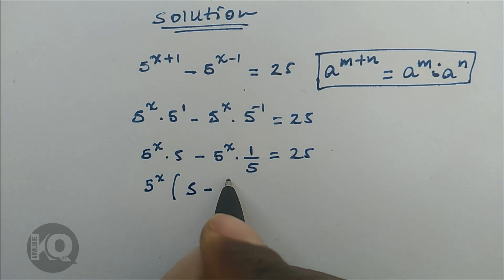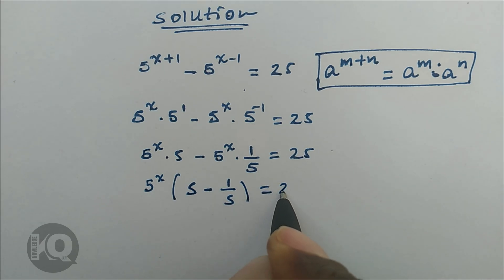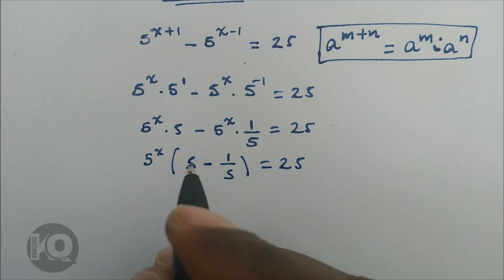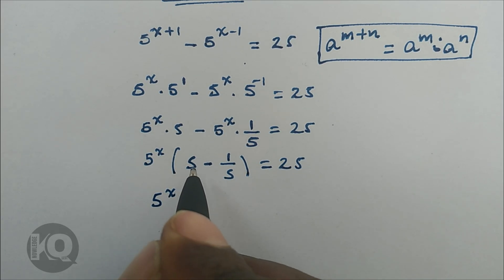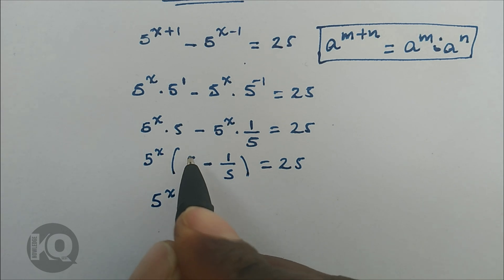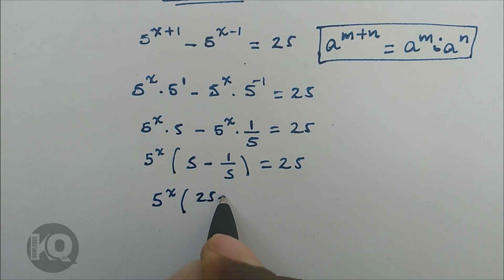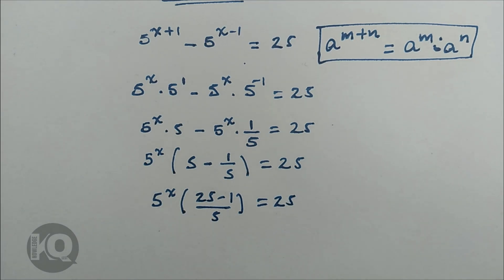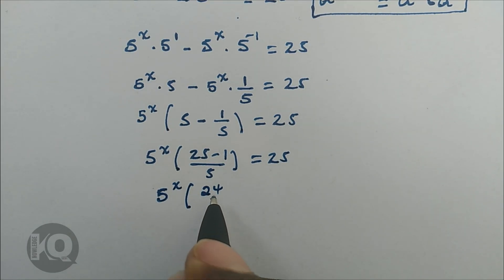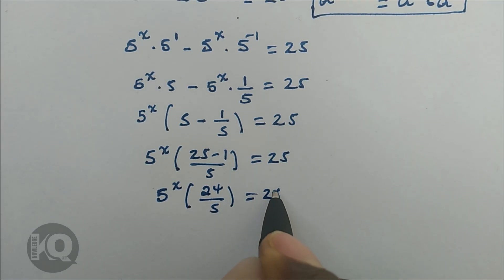Factoring out 5 to the power of x gives: 5 to the power of x times (5 minus 1 over 5) equals 25. To combine the bracket, we make a common denominator: 5 times (5 over 5) gives 25 over 5, so the bracket becomes 25 minus 1 over 5, which equals 24 over 5. So we have 5 to the power of x times 24 over 5 equals 25.